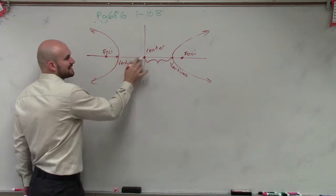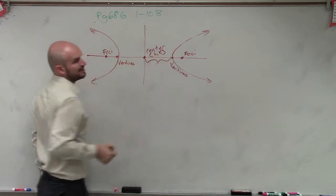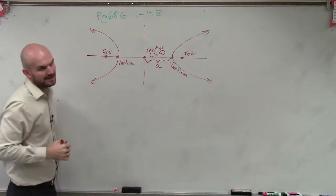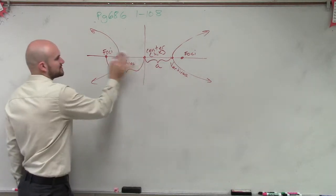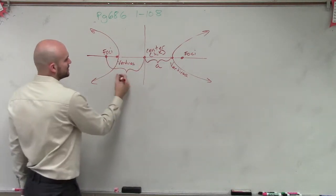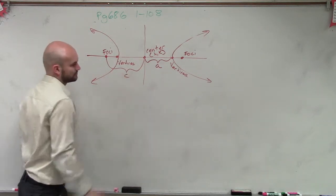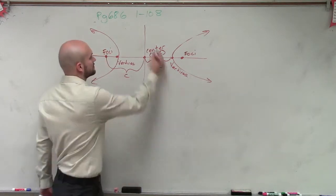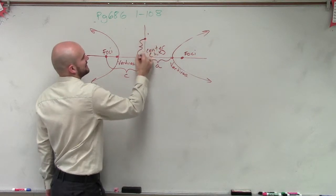Our distance from our center, so our center is still going to have the form h, k. That's not going to change. The distance from your center to your vertice is still going to be a. The distance from your center to your foci is still going to be, sorry, not b, c. And there's also going to be co-vertices, which is going to be a distance b.